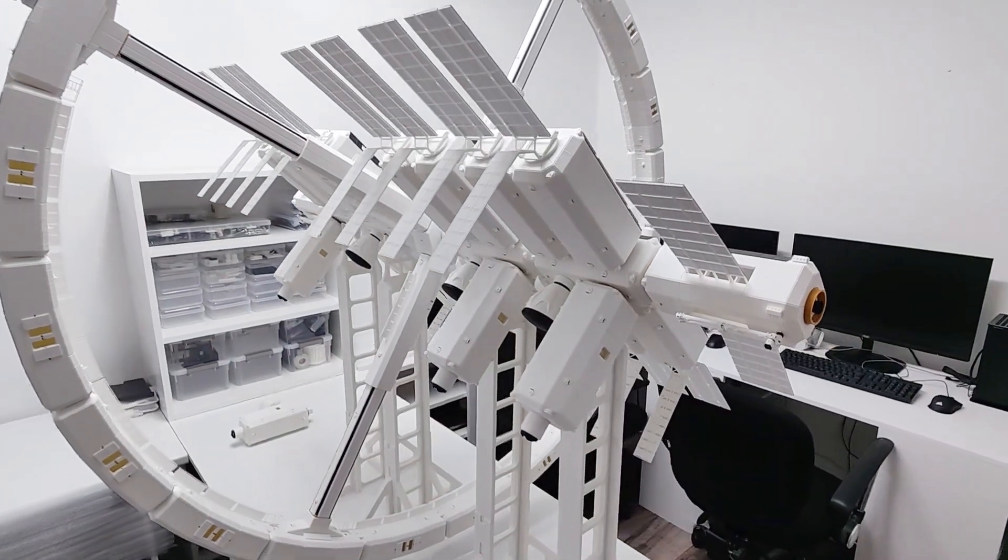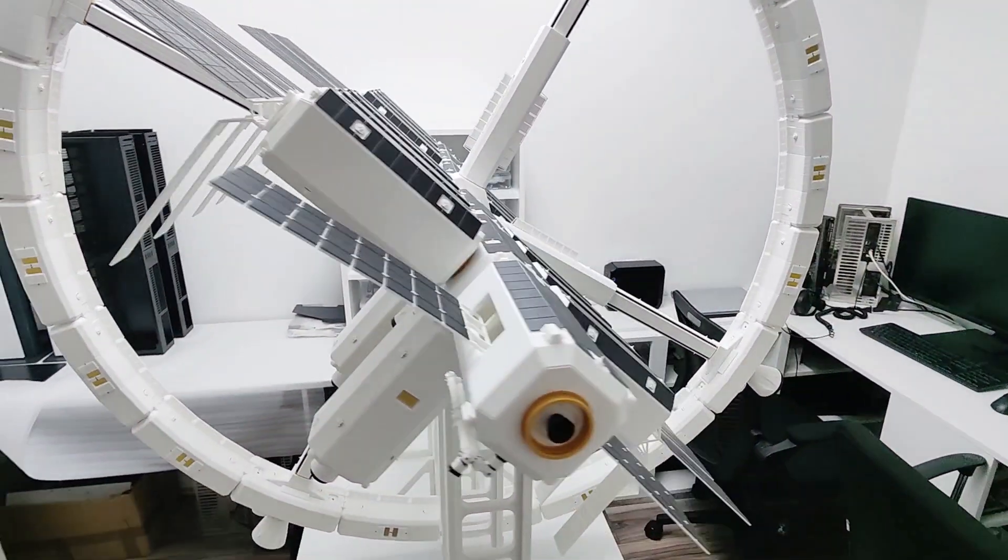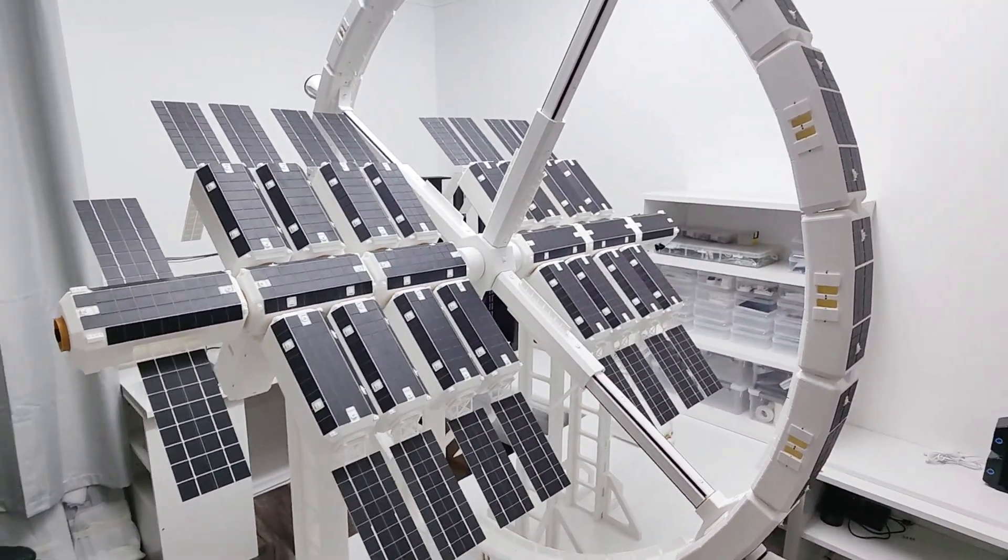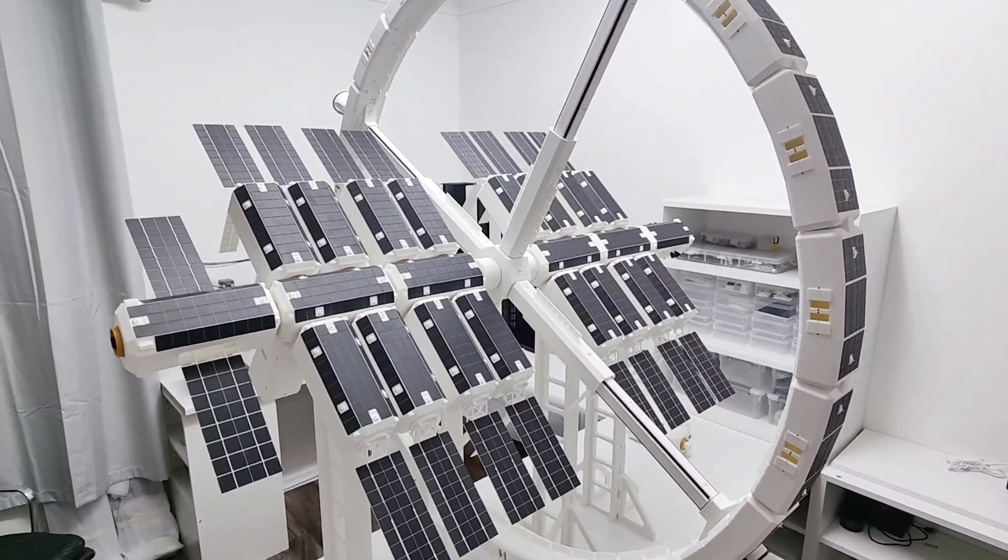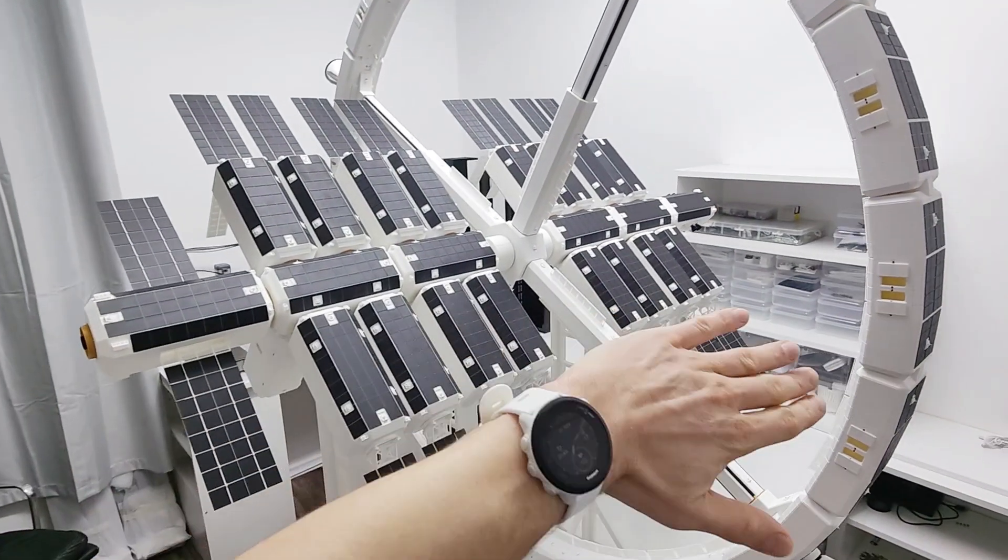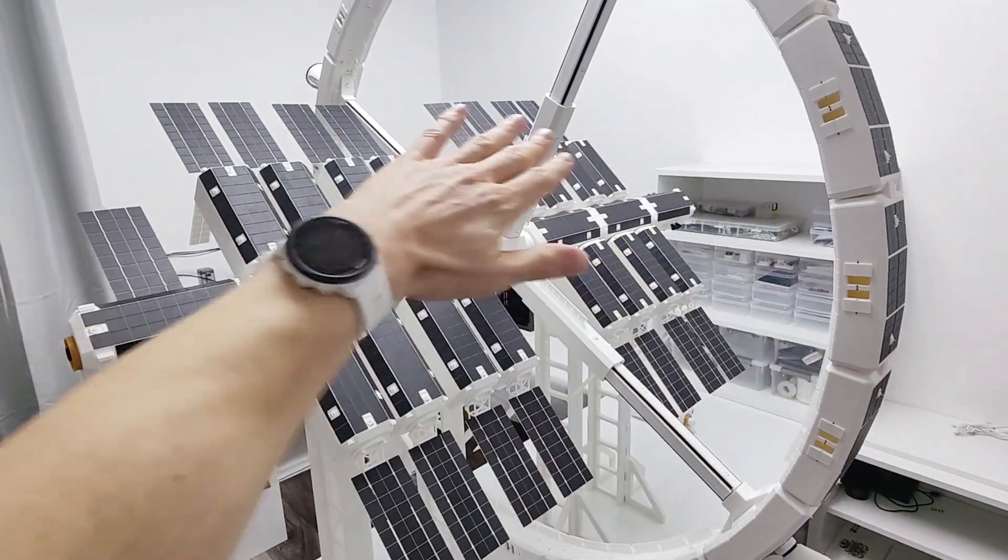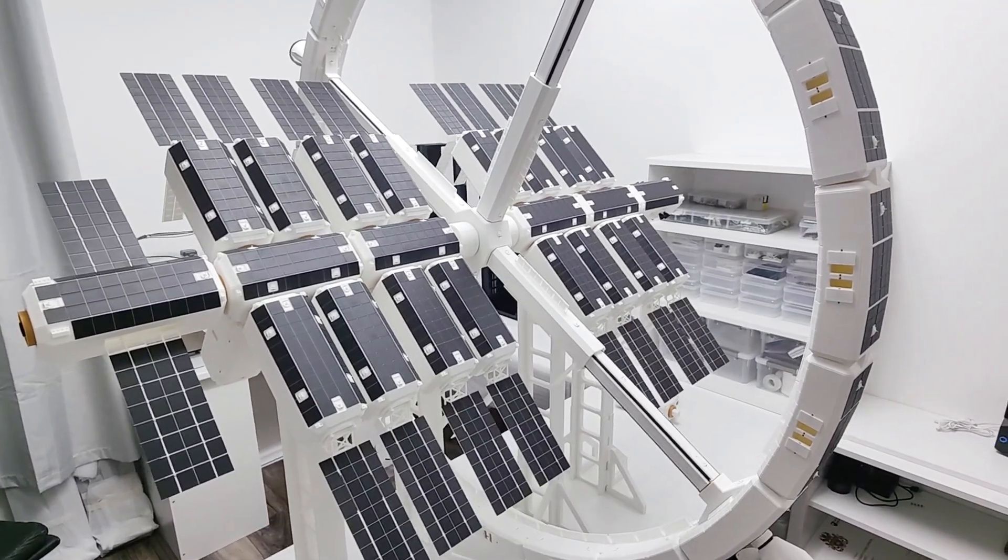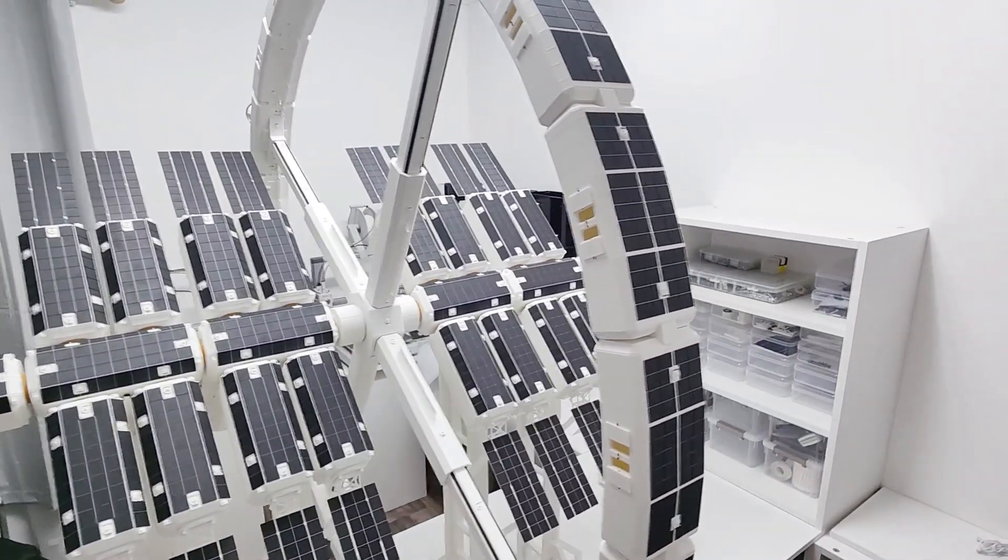Since I have touched on orientation maybe I should explain a little bit how that works. More specifically how it sustains the sun pointing orientation. Now you can probably guess that this whole side of the station should point to the sun at all times and the habitation section as well.